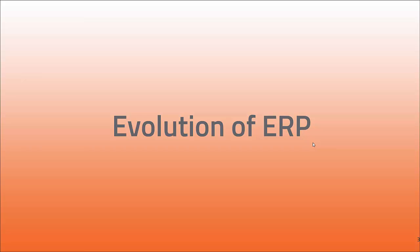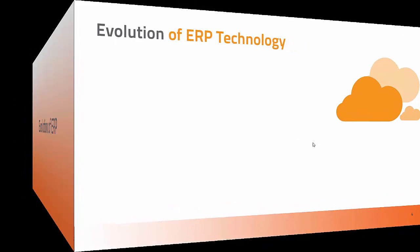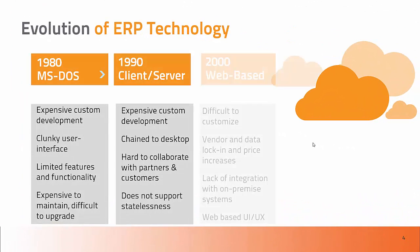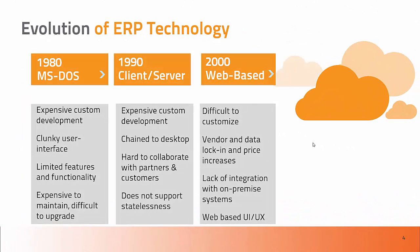Let's talk about the evolution of enterprise resource planning, because I think it's important to understand how we got to where we are today. Back in the 80s, when I first started selling accounting software, we were selling accounting software for MS-DOS — character-based. It was expensive custom development, the user interfaces were really clunky, they had limited features and functionality, and they were very expensive to maintain and difficult to upgrade.